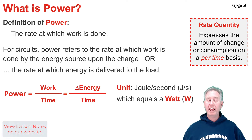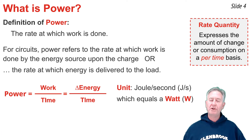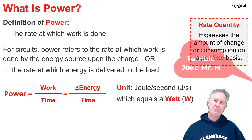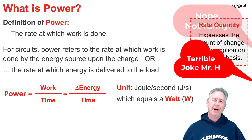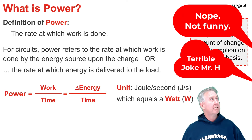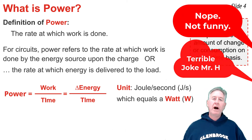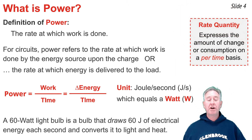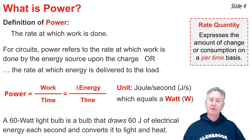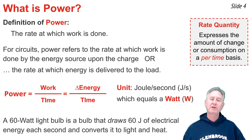One joule per second is equivalent to the watt, abbreviated W. So if anyone asks what is the unit of power, you'd say watt's the unit of power. A 60-watt light bulb is a light bulb that draws 60 joules of electrical energy every one second and transforms that electrical energy into light and heat.